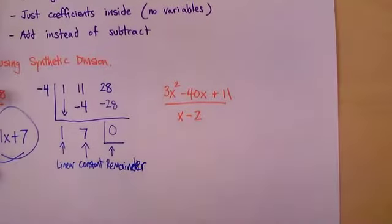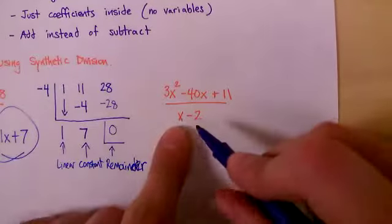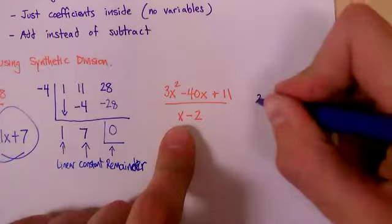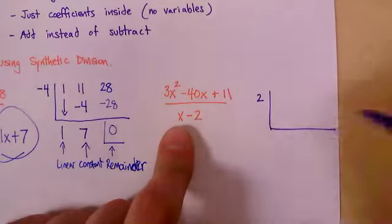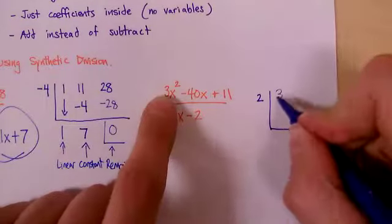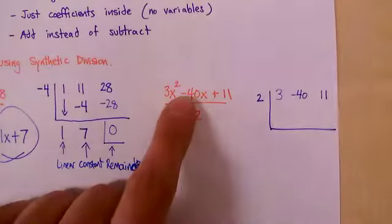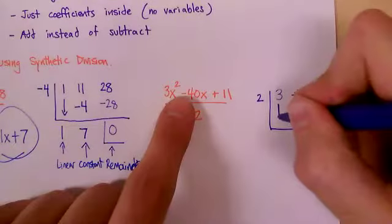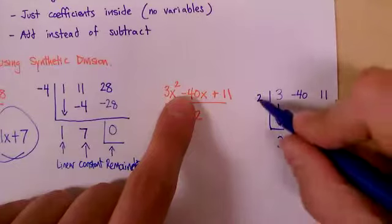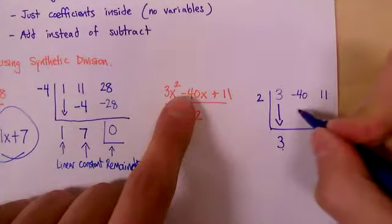So let's set up the second problem here. Again, you put the root on the outside. It's x-2, you're going to put a positive two. And then on the inside here, we do our coefficients. We got a three, we have negative 40, and we have 11. First guy, you just drag down. So three just goes all the way down to the bottom.